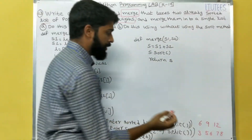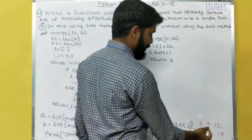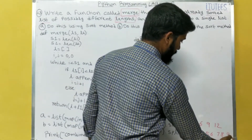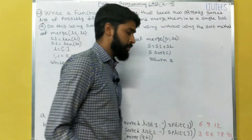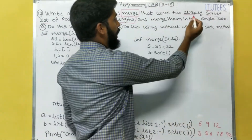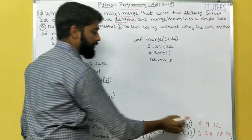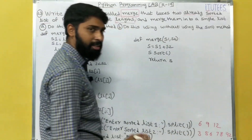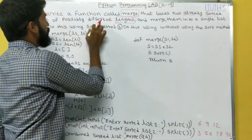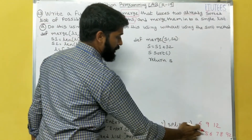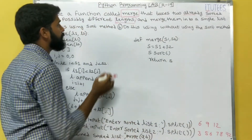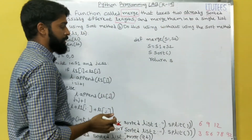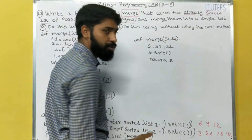So that means we are given two lists. For example 6, 9, 12 and 3, 56, 78 and 92. These two lists are already sorted. So we are giving the sorted list as input with possibly different lengths — this one has length 3 and this one has length 4. We merge them into a single sorted list.